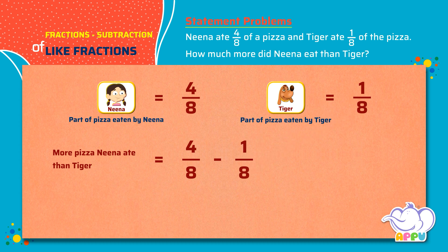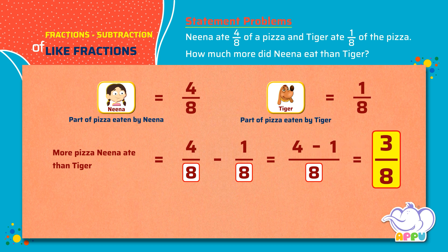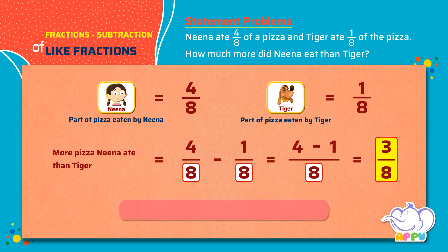We see that the denominators are the same for both the fractions — that is 8. We write the denominator as 8 and we subtract the numerators. 4 minus 1 equals 3. So, Nina ate 3 by 8 of the pizza more than Tiger.